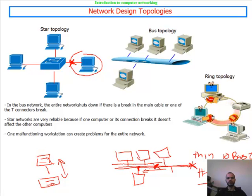We also have the token ring topology. In the token ring, there is a token running in a circle. The computer that has the token has the right to send. The data goes through all devices on the ring to reach its destination. However, if there is a break in the wire, the network is cut in half — which is one of its major drawbacks.